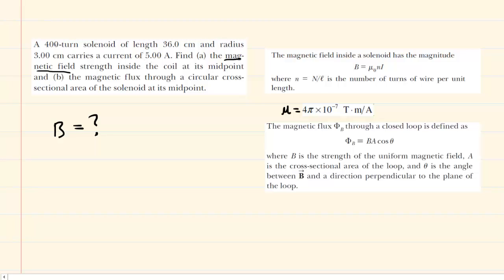We are given several parameters here. We have the number of turns in the solenoid, which is symbolized by capital N. We have the length, which will be L. We have a radius, which we will use for part B, and then we have a current, which is symbolized by I. If we can find a relationship between the magnetic field and the number of turns, length, and current, we would be in good shape.